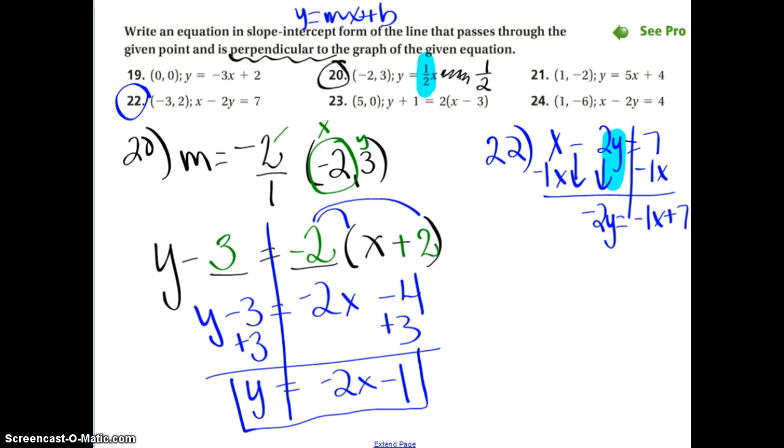Now, is the y by itself yet? No. So, I divide by negative 2. Divide by negative 2. Divide by negative 2. So, y equals negative, negative, positive, positive. 1 half x minus 7 halves.